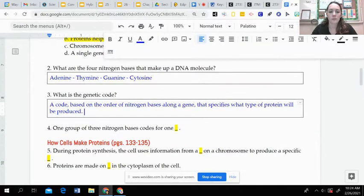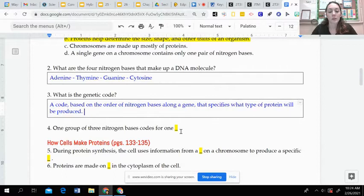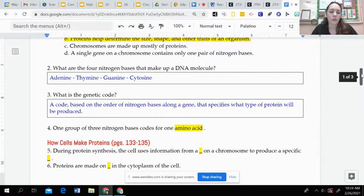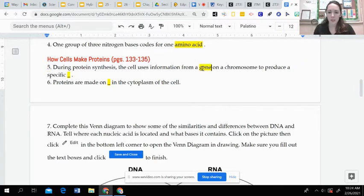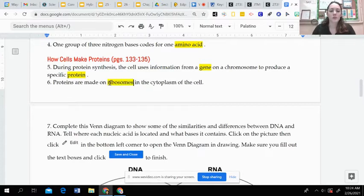Question four, one group of three nitrogen bases codes for one amino acid. So they are in groups of three. Then for five, during protein synthesis, the cell uses information from a gene on a chromosome to produce a specific protein. And proteins are made on ribosomes, which are in the cytoplasm of the cell. So that DNA first unzips and creates the messenger RNA in the nucleus of the cell. Then that messenger RNA is released into the cytoplasm where it attaches to those ribosomes.